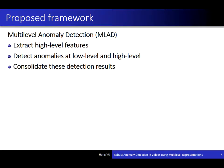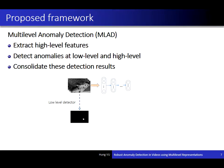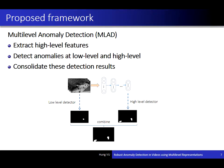We call our proposed framework multi-level anomaly detection, and it contains three steps. First, given a video, we use a denoising autoencoder to extract high-level representations of that video. We then apply low-level detectors on the frame data to detect anomalies. We also use a high-level detector to detect anomalies at high-level representations of the video. Combining these results, we obtain the final detection result.